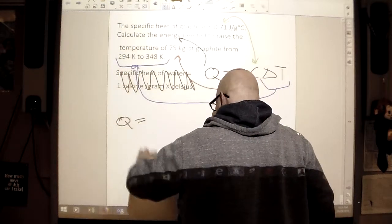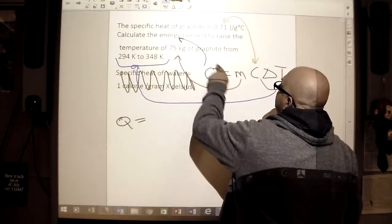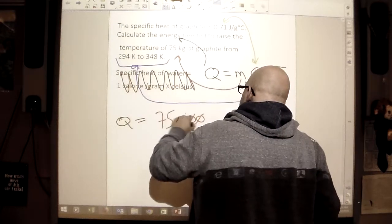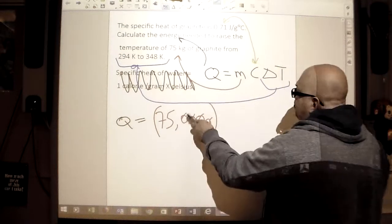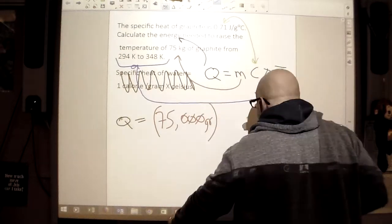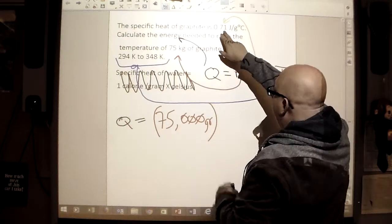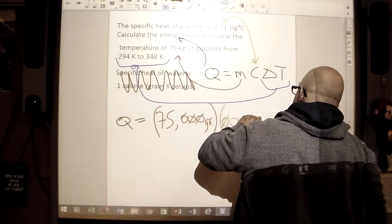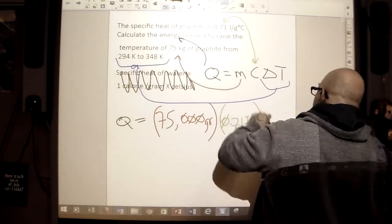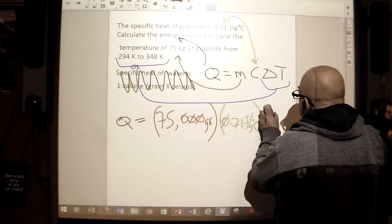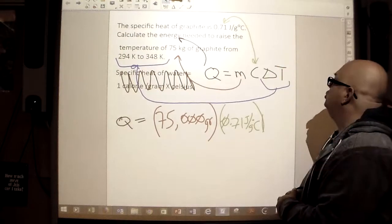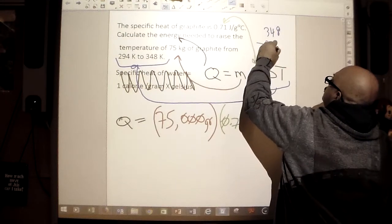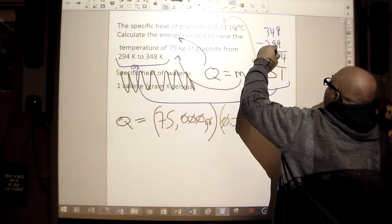So Q is going to be equal to our mass, and our mass, I have that in red, and we know that's going to be 75,000 grams. Notice I put it in red, so you can see where I'm getting that from. We have a specific heat that's in green. We got that there, 0.71 joules per gram times Celsius, multiplied by our change in temperature. So what about our change in temperature? 348 minus 294, and that gives us a 54 degree change.